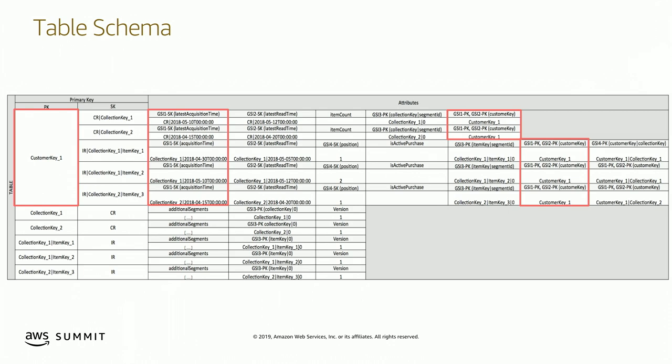Looking at the first two GSIs — GSI one and GSI two — they share the same partition key as the table, so these could actually be LSIs. We use GSIs in this case because they're flexible; we can create and delete them at any time. LSIs are more rigid — created when the table is created and can never be removed. Strong consistency wasn't a big issue here because the data is not highly mutable, so we said we'll use GSIs.